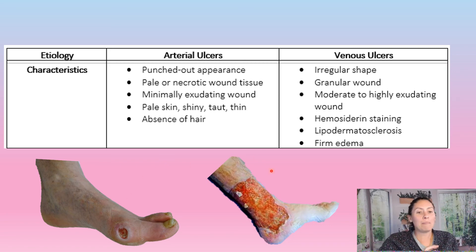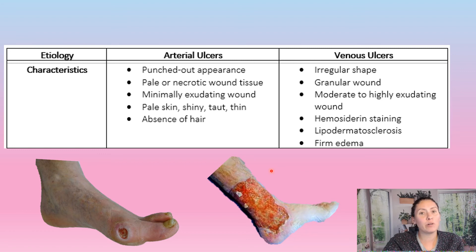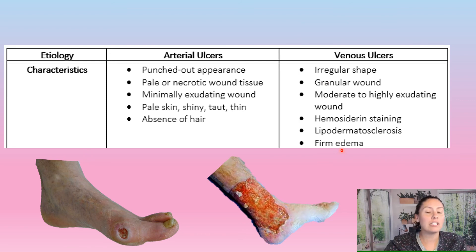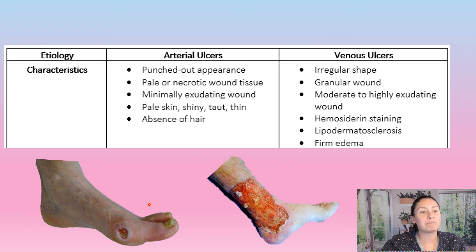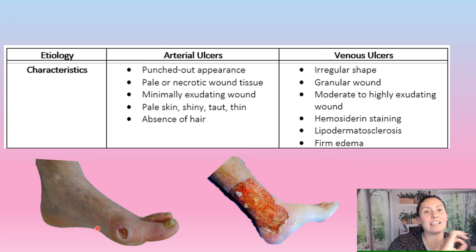The only complicating factor is when people have mixed etiologies, which is very common nowadays. That's why ABPIs are so important to obtain before ever putting someone into compression. With venous ulcers, we need compression therapy to heal the wound — without it, it's going to be very difficult. But when we have a mixed etiology where blood doesn't want to go back up and also doesn't want to come down to the feet, applying strong compression will stop blood flow even more and could cause major problems such as toes going necrotic. So we really have to perform ABPIs to confirm the etiology, even though we can visualize the wound.